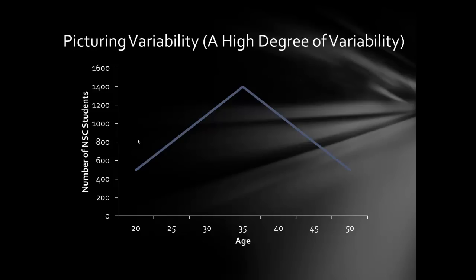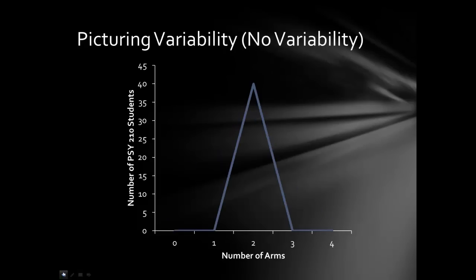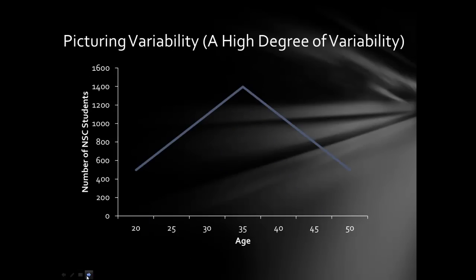If instead of kindergarten students we looked at the age among NSC students, we'd find quite a bit larger spread — many different age groups on campus. This would be an example of high spread in scores, lots of differences. The measures of variability would be relatively larger. As variability increases, the width of the distribution also increases to represent that increase in spread of scores.